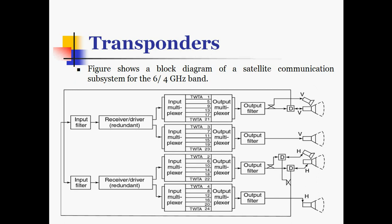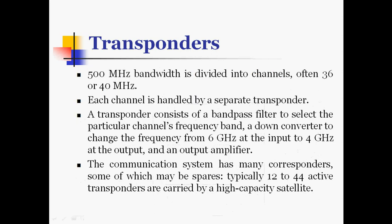This figure shows the satellite communication subsystem working on the 6 by 4 GHz band, with input filters, redundant receiver drivers, and travelling wave tube amplifiers allocated to channel numbers. Different channels are given to the travelling wave tube amplifiers, output multiplexer, and output filter, then sent through the antennas. The 500 MHz bandwidth is divided into channels of 36 or 40 MHz, and each channel is handled by a separate transponder consisting of a bandpass filter to select the particular channel's frequency band.